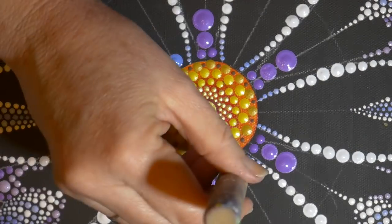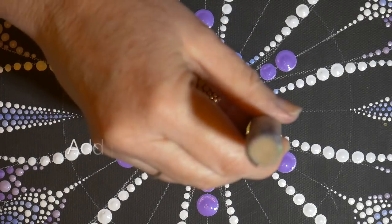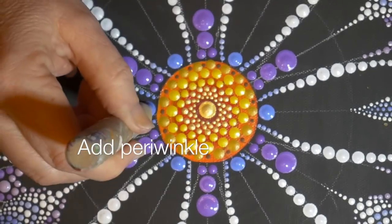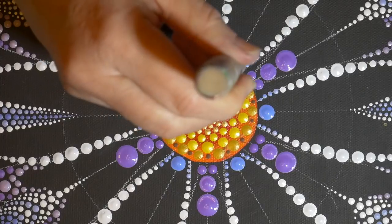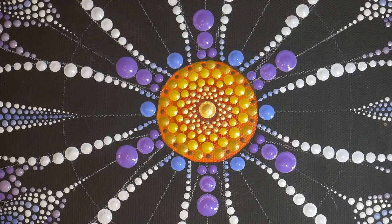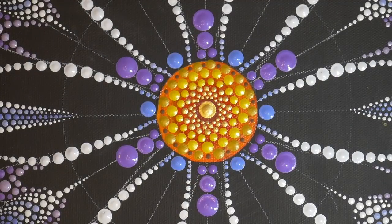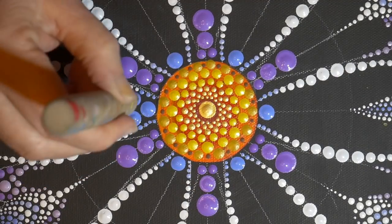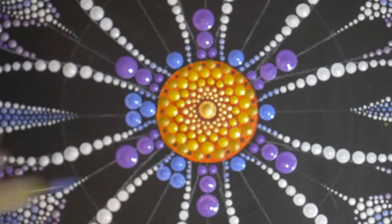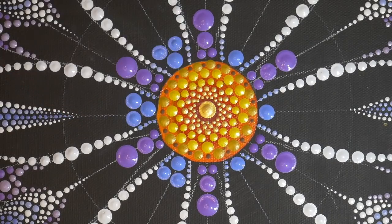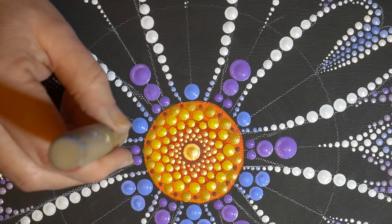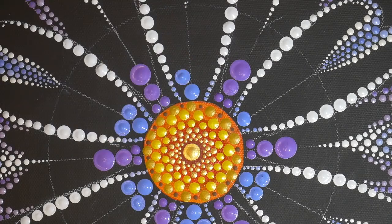Here I'm starting with the periwinkle blue. I'm not really talking about the sizes of tools or the specific paints here - I'm just sort of giving you an idea of what I'm kind of thinking as I'm designing on the fly here. I really am just making it up and seeing what will fit.